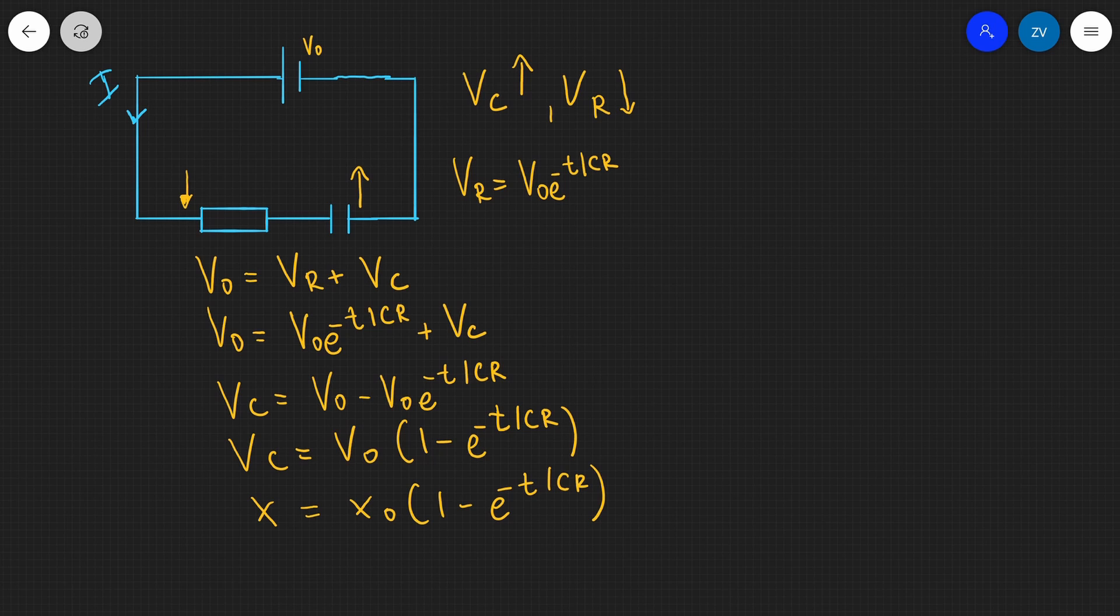And we've just managed to rearrange for the potential difference across the capacitor. I'm just going to circle this formula over here. And this is really, really important. So this is our formula for the potential difference across a charging capacitor. If there are any questions, please feel free to drop a comment down below.